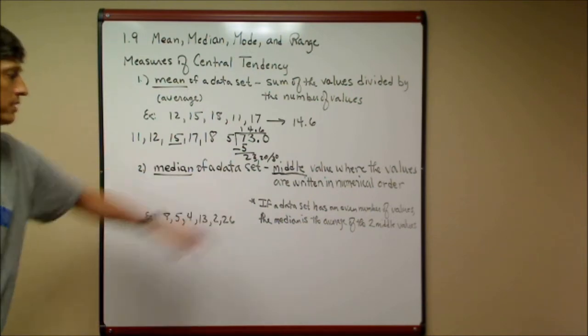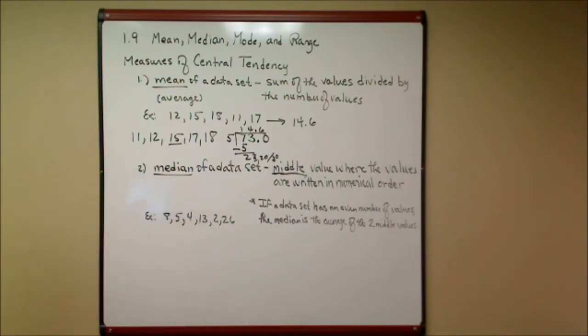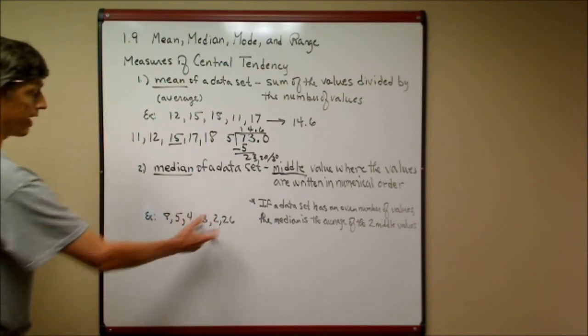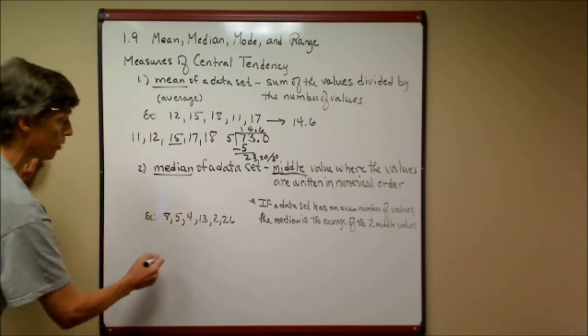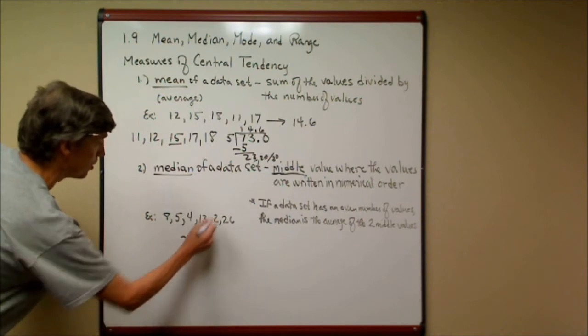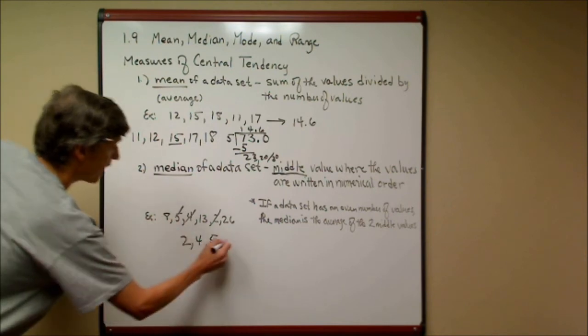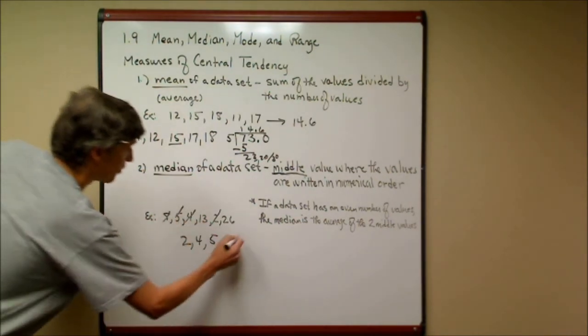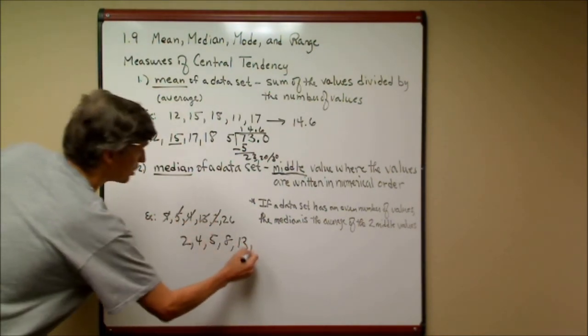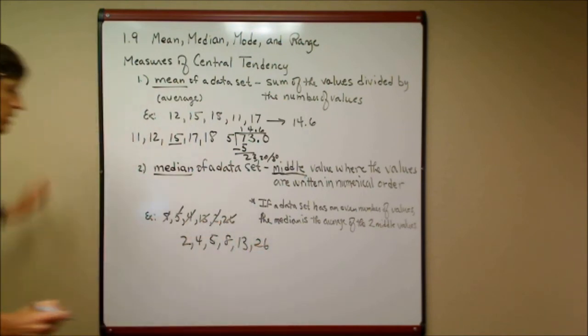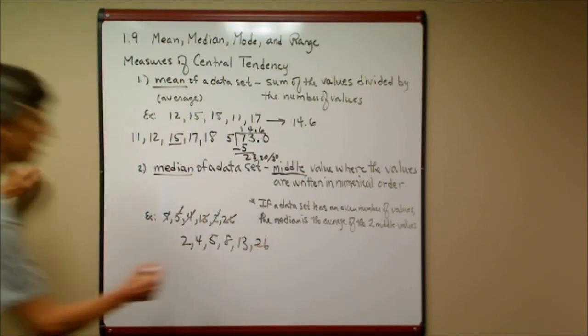Now I've got a little asterisk here that says if a data set has an even number of values, the median is the average of the two middle values. This had an odd number, there were five. But in this example, as you can see, I have six numbers. I'm going to put them in order, least to greatest: that's two, then four, then five, then eight, then 13, and then 26. And those are my six numbers, an even number of numbers.